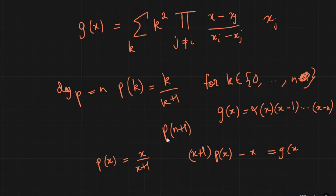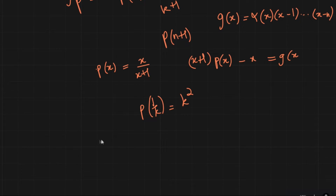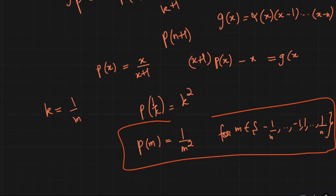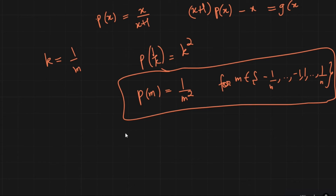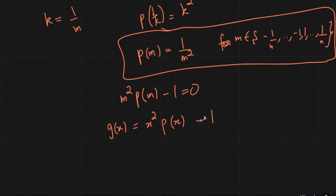I remembered this and noticed our problem looks similar, except we have p(1/k) = k². I can make it similar by substituting k = 1/m, giving p(m) = 1/m² for m in the set {-1/n, ..., -1, 1, ..., 1/n}. I can rewrite this as m²p(m) - 1 = 0. So if I set g(x) = x²p(x) - 1, I already have 2n zeros of this polynomial — and that's a lot of zeros. This is looking good; I can maybe factor something.